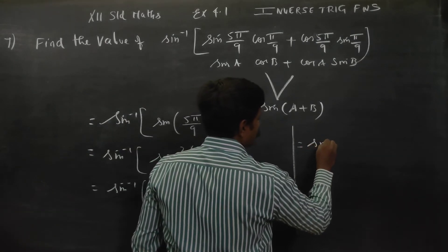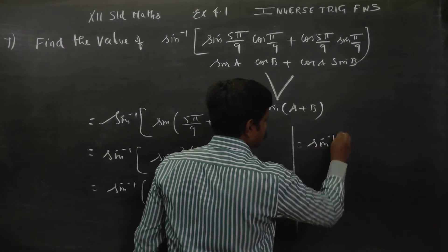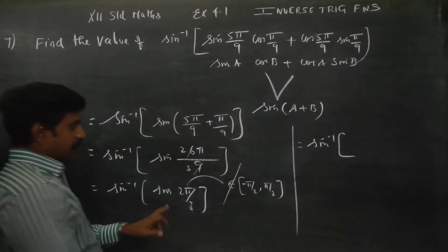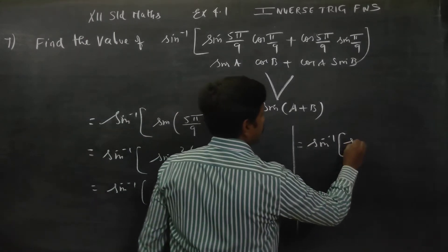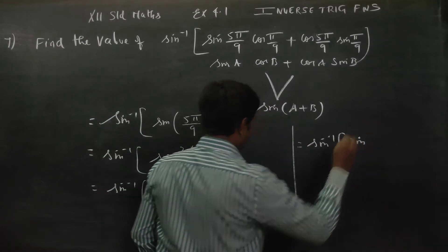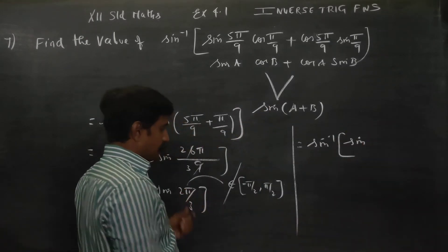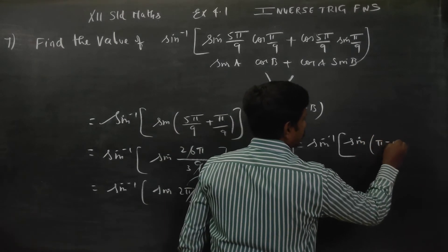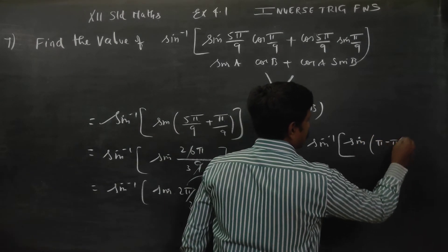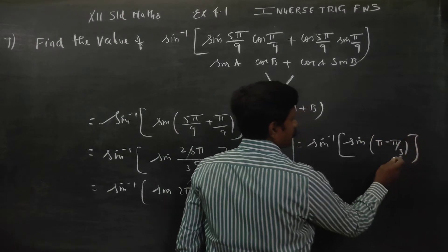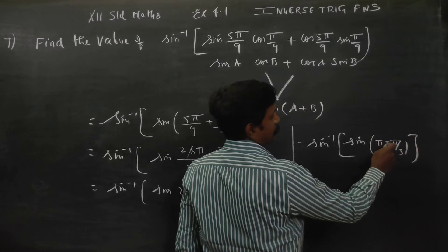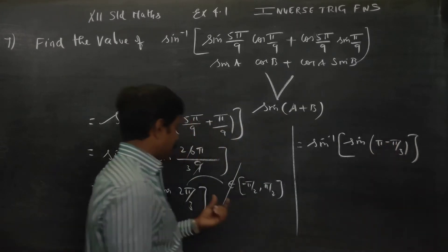Sin inverse of sin(2π/3) can be written as sin inverse of sin(π minus π/3). Cross-checking: 3π minus π over 3 gives 2π/3. This simplification is valid.